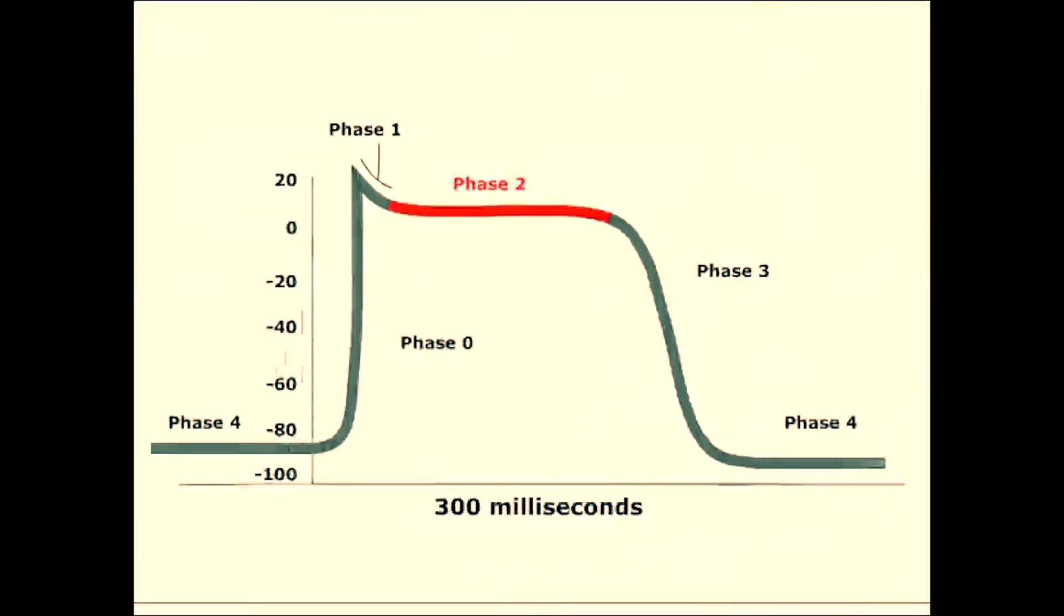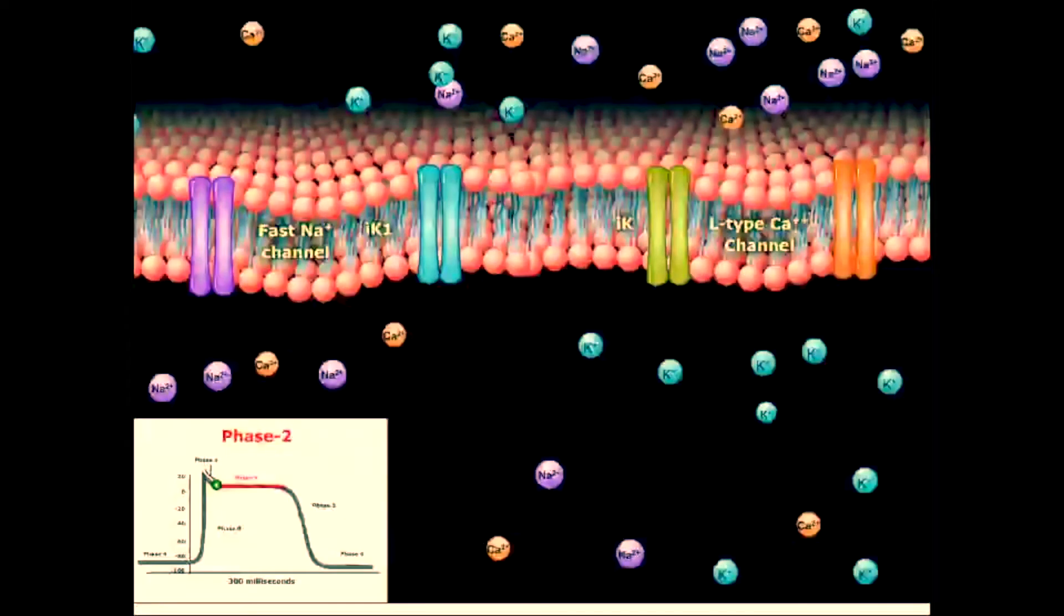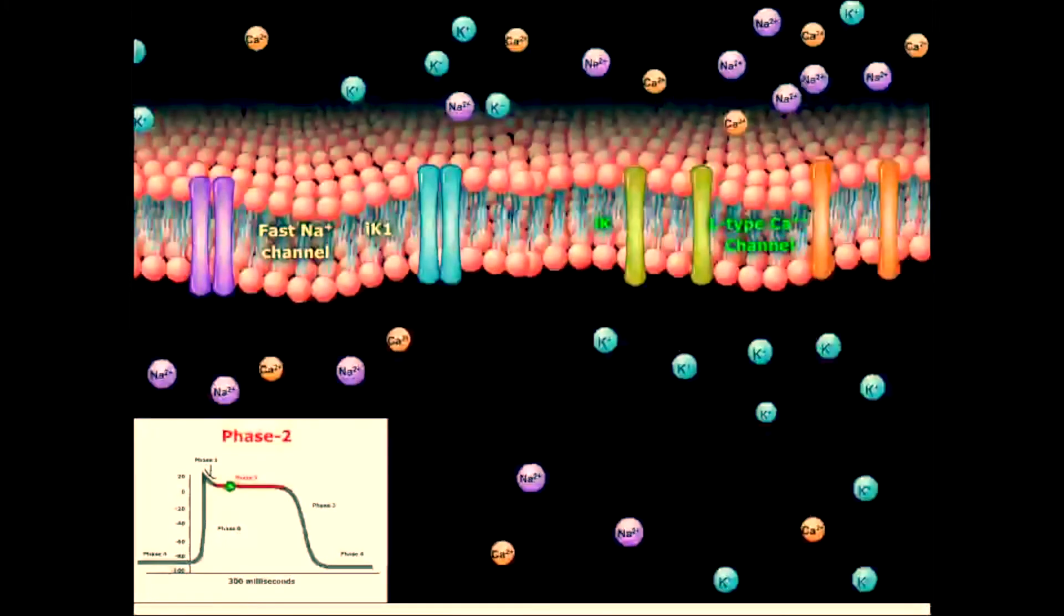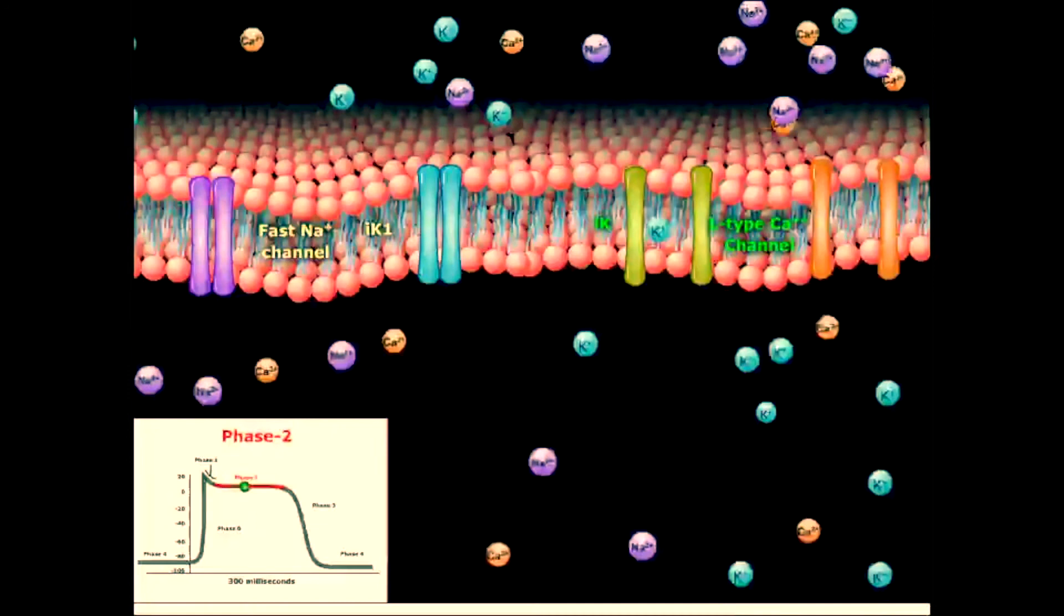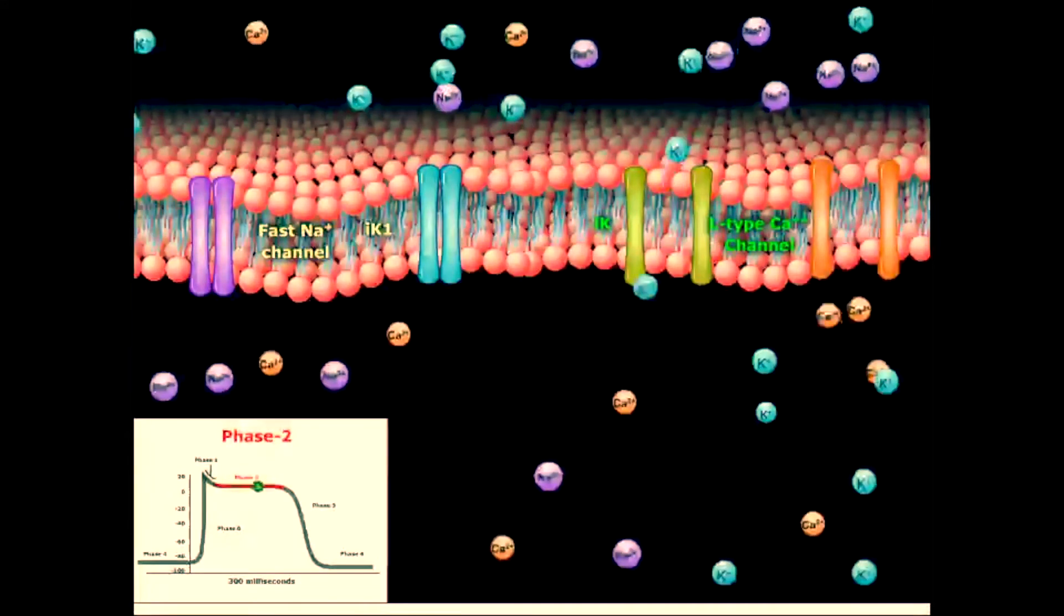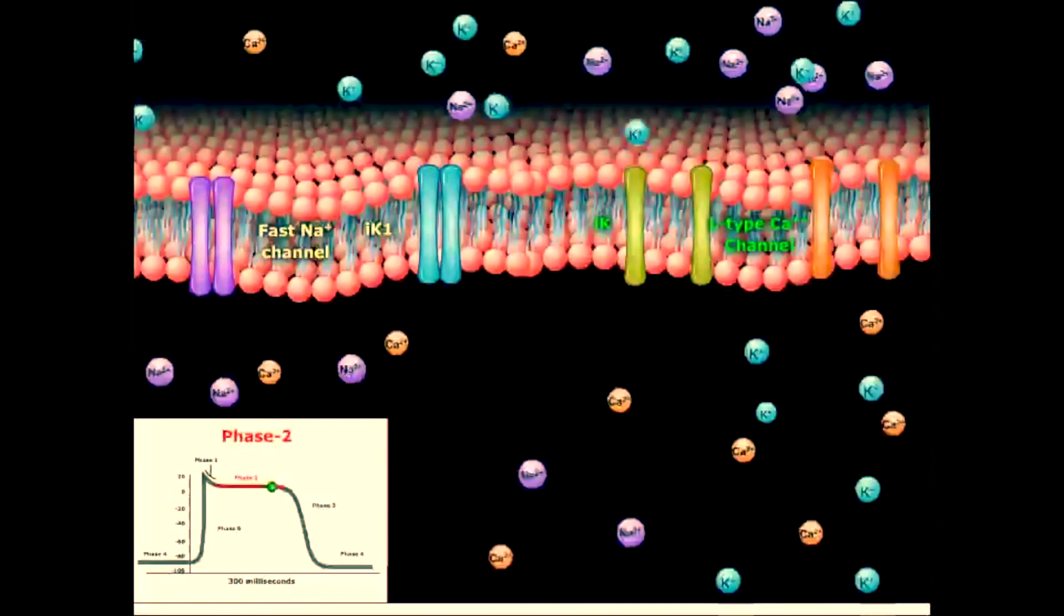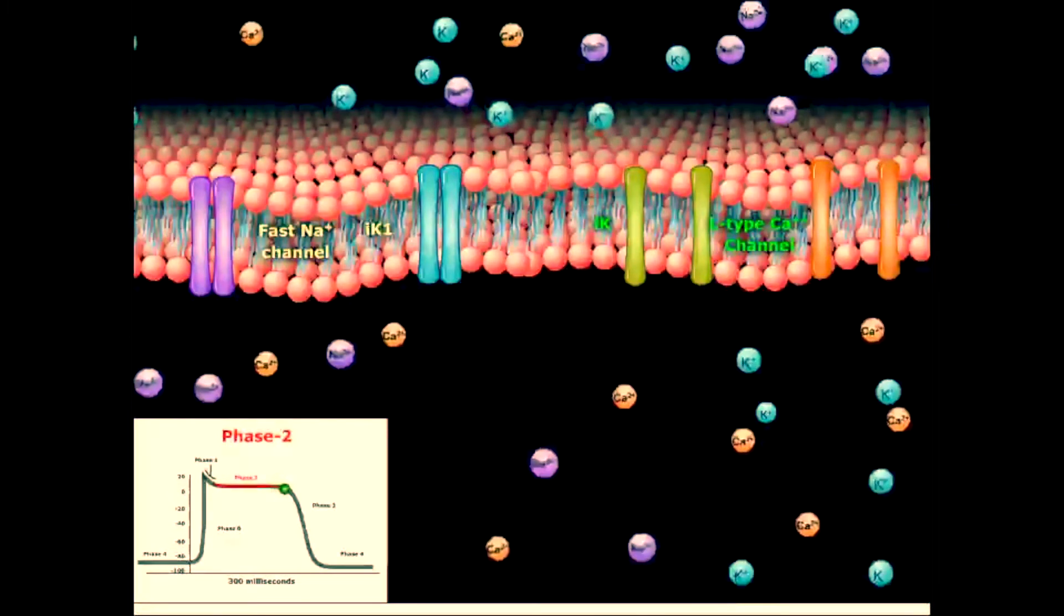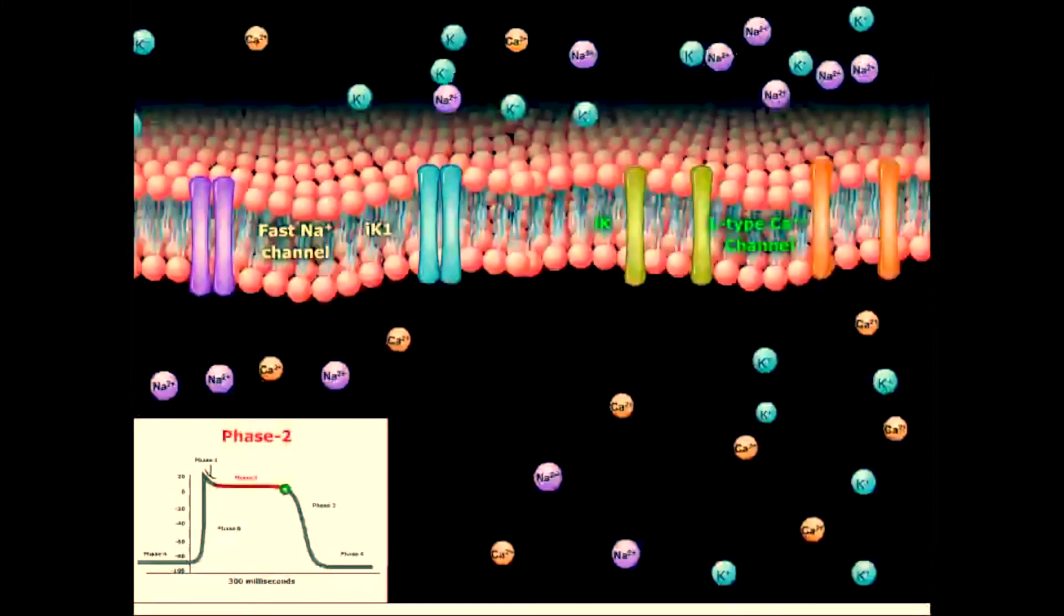Phase 2 is the plateau phase of the cardiac action potential. It is sustained by a balance between slow inward movement of calcium through L-type calcium channels, and an outward movement of potassium through slow delayed rectifier potassium channels, labeled here as IK.